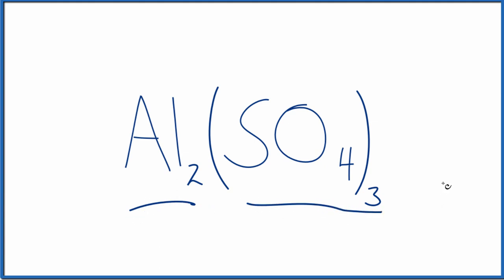So to do that, we first need to recognize that we have a metal, that's aluminum, and a group of non-metals. This is the sulfate polyatomic ion. Metal and non-metals, it's going to be an ionic compound. So we're going to think about charge.